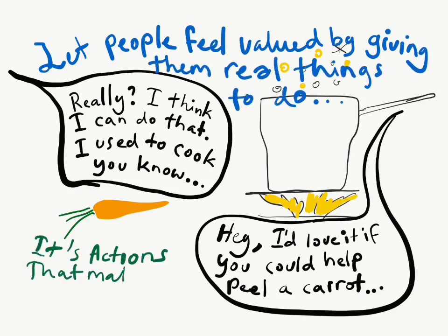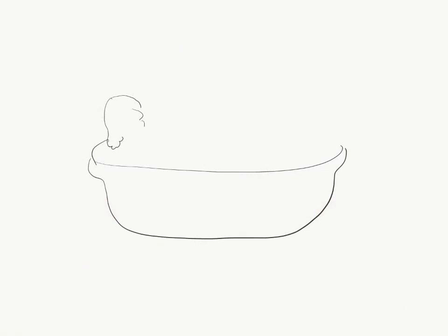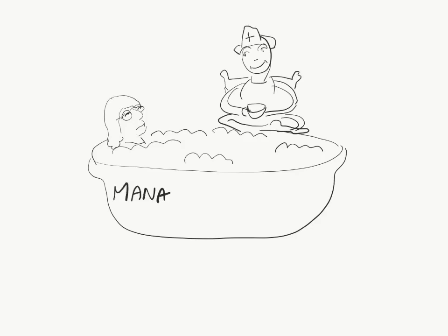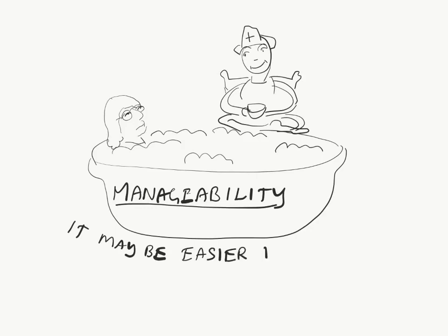Likewise, when people become frail it's sometimes easier to do things for them even when they still have some capacity themselves. When it comes to manageability it's not good to overburden clients but to keep the self-management skills going as long as possible.